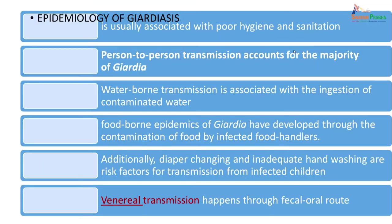Giardiasis is usually associated with poor hygiene and sanitation. Person-to-person transmission accounts for the majority of infections. Waterborne transmission is associated with ingestion of contaminated water, and foodborne epidemics have developed through contamination by infected food handlers. Diaper changing and inadequate hand washing are important risk factors in children. Venereal transmission via the fecal-oral route has also been reported. All these factors contribute to the endemic nature of Giardia in the environment.